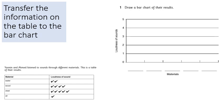Has the data been presented clearly? On the right you have a bar chart. Your task is to transfer the information from the table Yasmin and Ahmed provided onto the bar chart. You've got your vertical and horizontal axis — remember to give your bar chart a title. Pause here to complete the task.